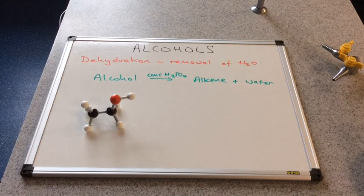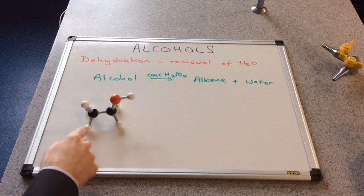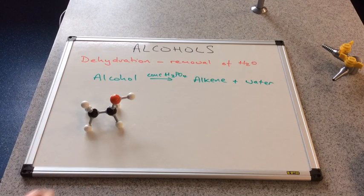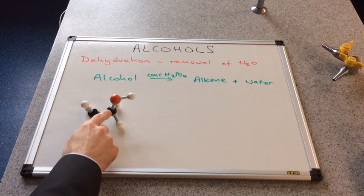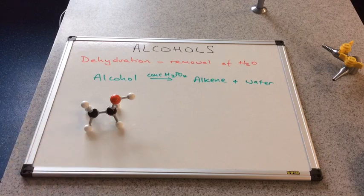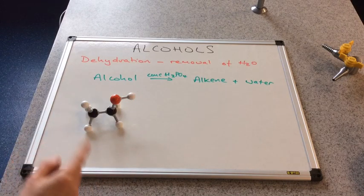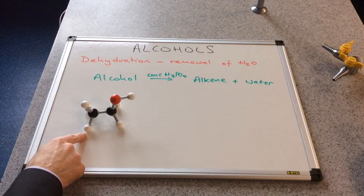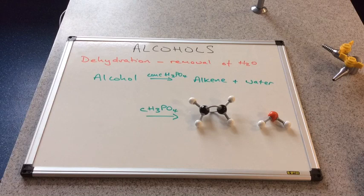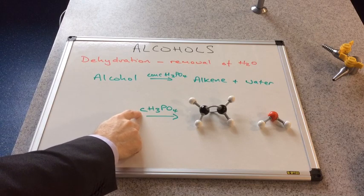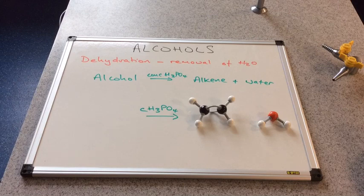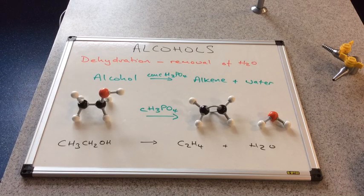I'm going to show you an example using ethanol with the model kits. Here's the ethanol molecule. Water is made from an oxygen and two hydrogens. The rule is: you remove the second hydrogen from the carbon adjacent to the OH carbon. The OH comes off and that second hydrogen comes from the adjacent carbon. The dehydrating agent is concentrated H3PO4, and there's the chemical equation.